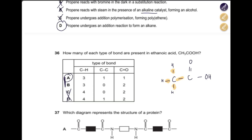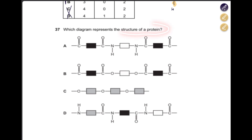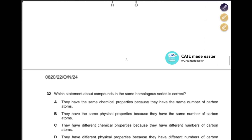There is also one C=O bond. Which diagram represents the structure of a protein? Proteins have an amide linkage: C=O and N–H. The first and last options have the amide linkage, so B and C are eliminated. Looking at the ends, we need N–H present. The correct answer is D.